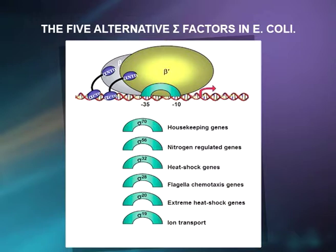The prokaryotic core transcription machinery recognizes the promoter sequence which has minus 10 and minus 35 sequences. The extended conformation of the sigma factor binds to these minus 10 and minus 35 sequences of the basal promoter. The N-terminal domain (NTD) of each of the two alpha subunits binds to the core polymerase enzyme, while the C-terminal domain (CTD) interacts with the upstream promoter elements.